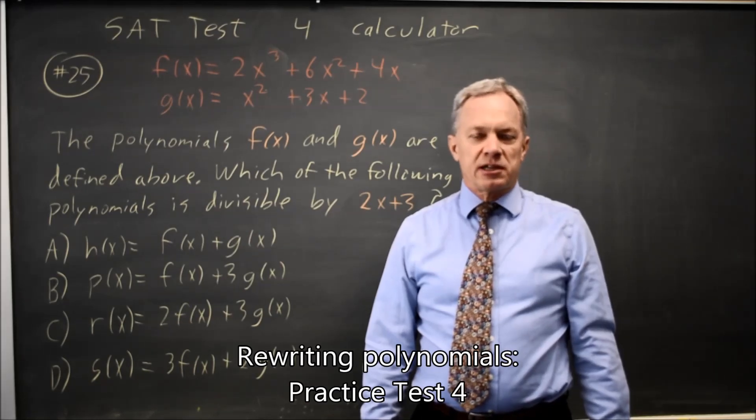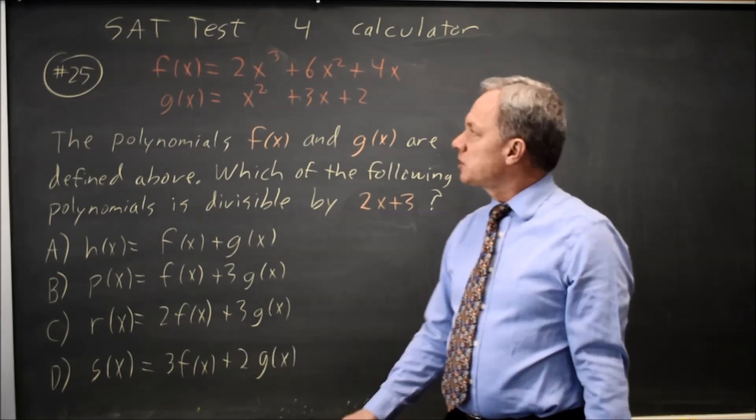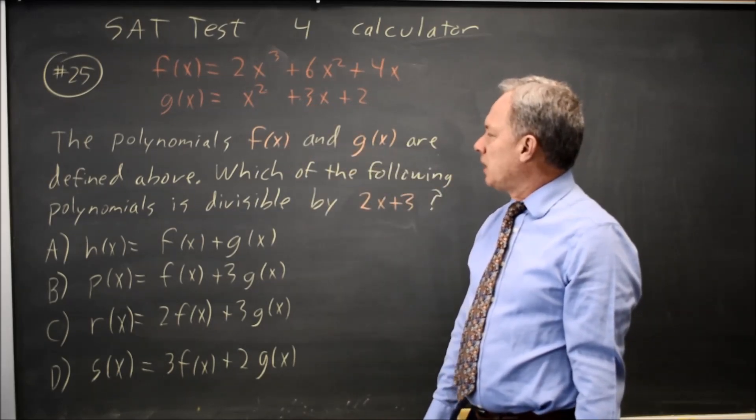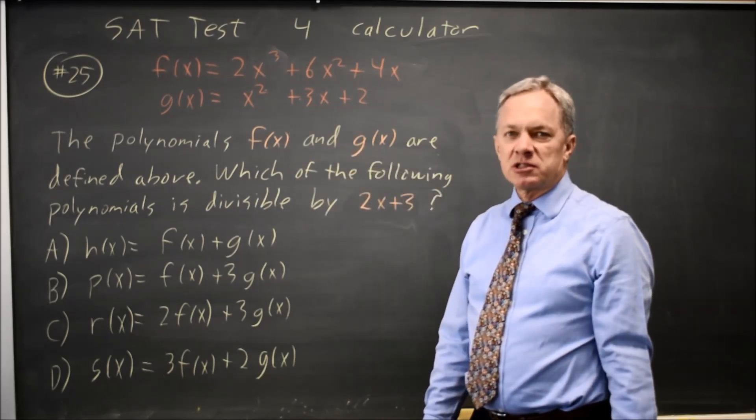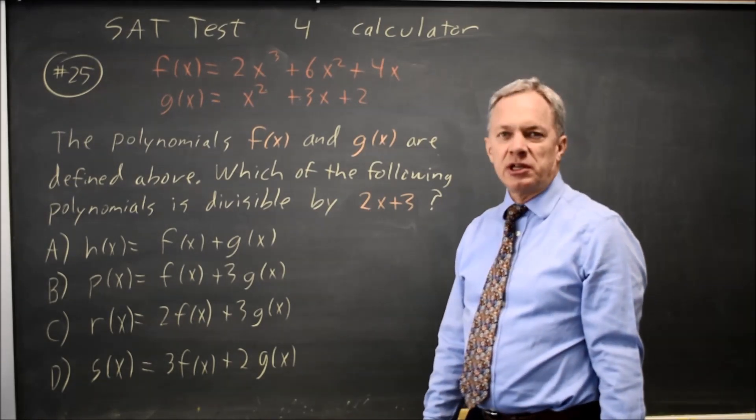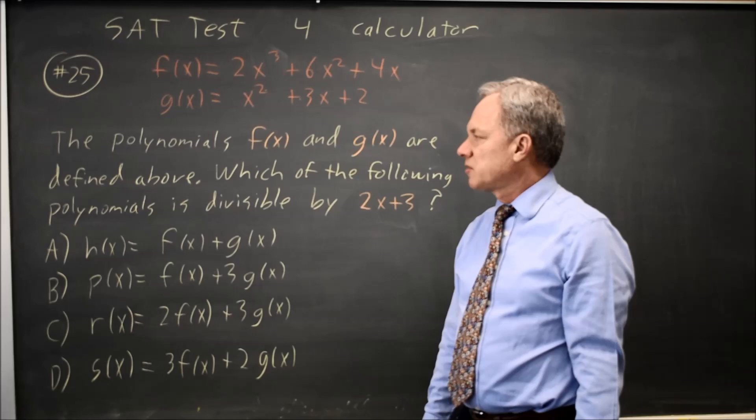This is SAT test 4, calculator question number 25. The College Board gives us two polynomials, f and g of x, and asks which of the following polynomials is divisible by 2x plus 3, and they give us linear combinations of f and g.